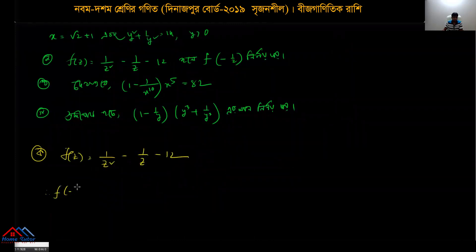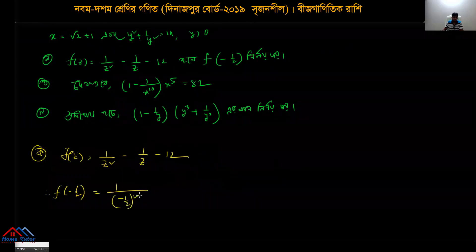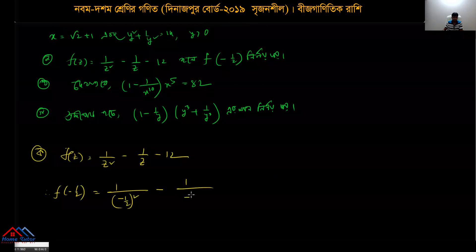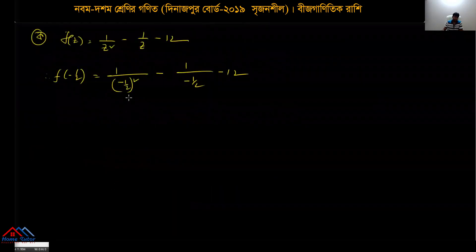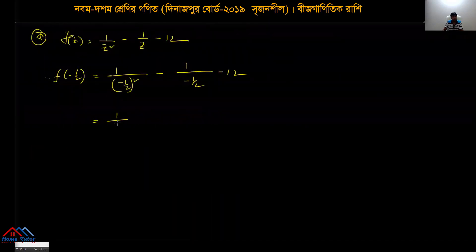In general, substituting z = -1/2: f(-1/2) = 1/(-1/2)² - 1/(-1/2) - 12. The square of -1/2 is 1/4, so we get 4 + 2 - 12. This simplifies to a positive terminated value.